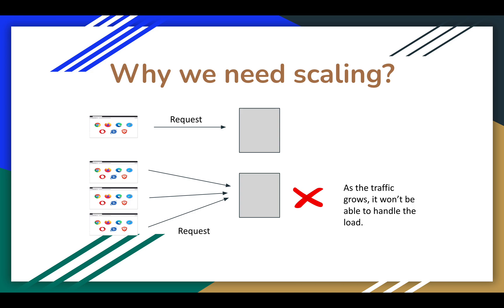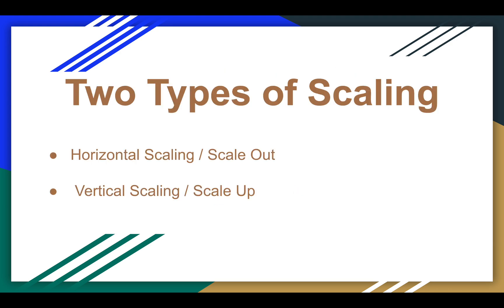In order to handle all the requests, we have to scale the system. Scaling simply means we have to increase the system resources so that it can cater to all the requests. There are two ways to scale the system: one is horizontal scaling, also known as scale out, and the other is vertical scaling, also known as scale up.